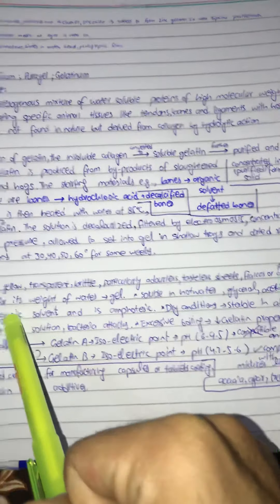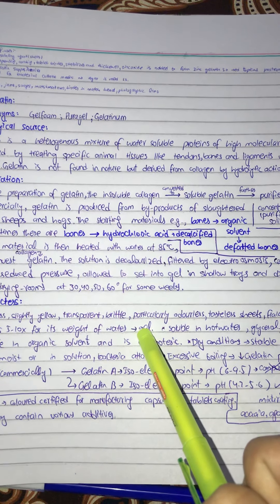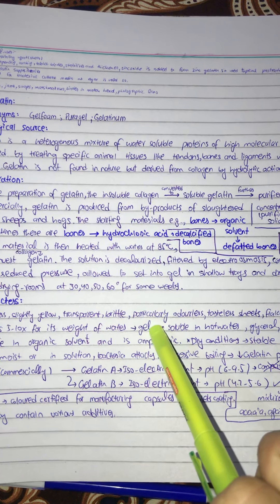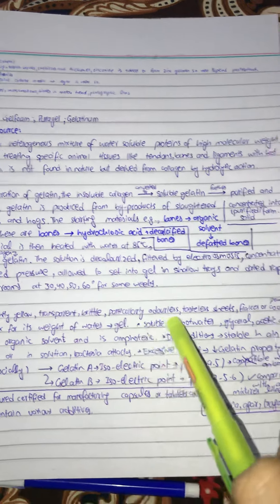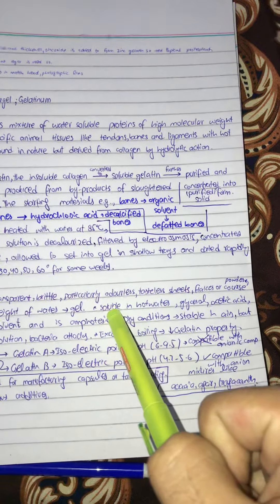It absorbs 5 to 10 percent of its weight of water. These proportionalities will be changed after we discuss in part number two. If gel is about 500 grams, it can absorb about 500 times 10 percent.